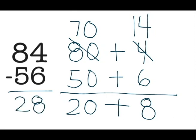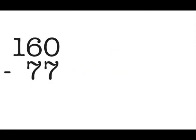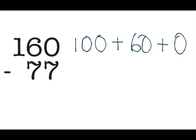Finally, let's take a look at a problem with a three-digit number. 160 in expanded form is 100 plus 60 plus 0 in the ones place, and 77 is 70 plus 7. Again, I notice I have a problem. I don't have enough to subtract from at the moment, so I'm actually going to look at the tens first here.